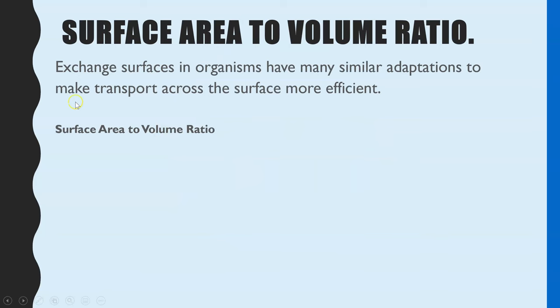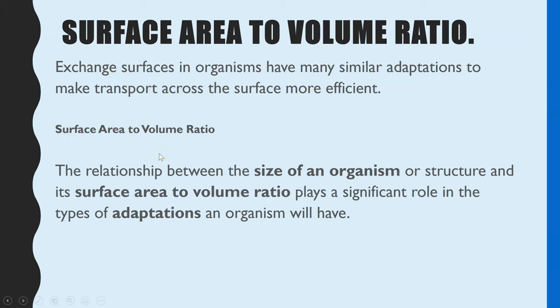To start, it's all to do with exchange surfaces in organisms. This explains how many exchange surfaces, whether that's for gas exchange or absorption and digestion, have similar adaptations to try and make the transport across those surfaces more efficient. We'll be looking at the maths behind the surface area to volume ratio, then we'll have a look at some examples of the adaptations.